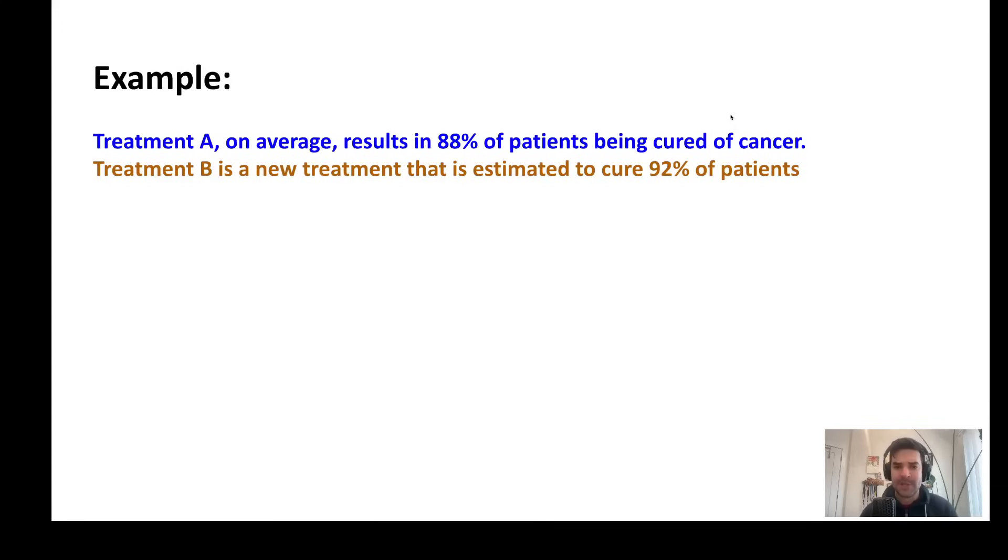Let's walk through a toy example. We have some treatment A, and on average, it results in 88% of patients being cured of cancer. And there's some new treatment, treatment B, that might achieve a cure of 92%. Where do you come up with these numbers? Based on prior studies, prior published literature.